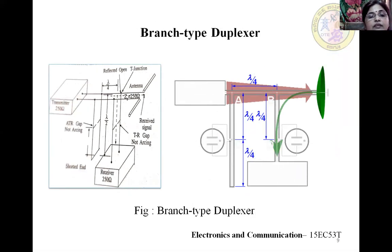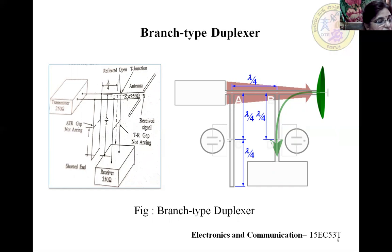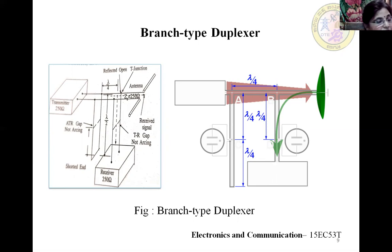This was about the branch type duplexer during transmission. During reception, the amplitude of the received echo is not sufficient to force an arc across either part of the gap. Under this condition, the ATR circuit acts as a half-wavelength transmission line terminated in a short circuit. This is reflected as an open circuit at the receiver T-junction, three-quarter wavelength away. The received echo sees an open circuit in the direction of the transmitter. The receiver input impedance is matched to the transmission line impedance, so the entire received signal goes to the receiver with the minimum amount of loss.